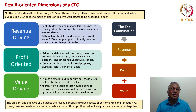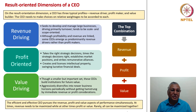Under revenue driving, the CEO seeks to develop and manage large businesses. Driving primarily turnover tends to be scale and scope oriented. Although profitability and revenue are interlinked, some CEOs emerge as predominantly revenue drivers rather than profit makers. The profit-oriented CEO takes the right strategic decisions, times them correctly, establishes market positions and strikes remunerative alliances. As a result, the profit maker is able to maximize the profitability of a business.